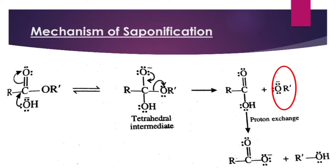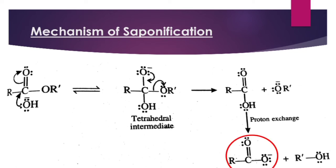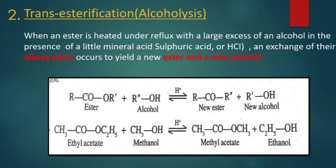Now we have a carboxylic acid and an alkoxide. The alkoxide is an extremely strong base, and the carboxylic acid has an acidic hydrogen. The next step is proton exchange to give a carboxylate and a neutral alcohol. This is the mechanism of saponification.